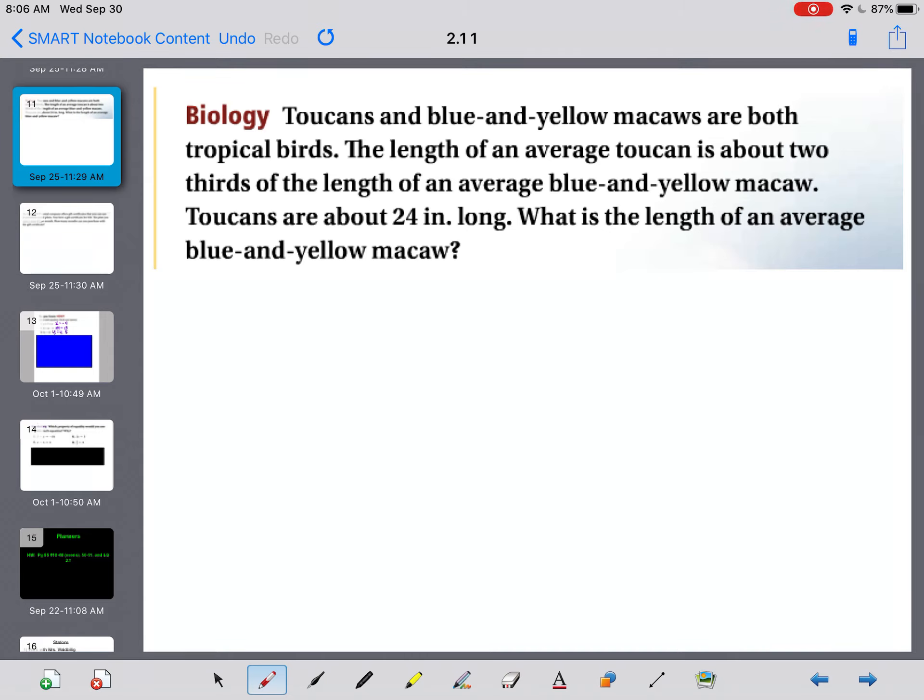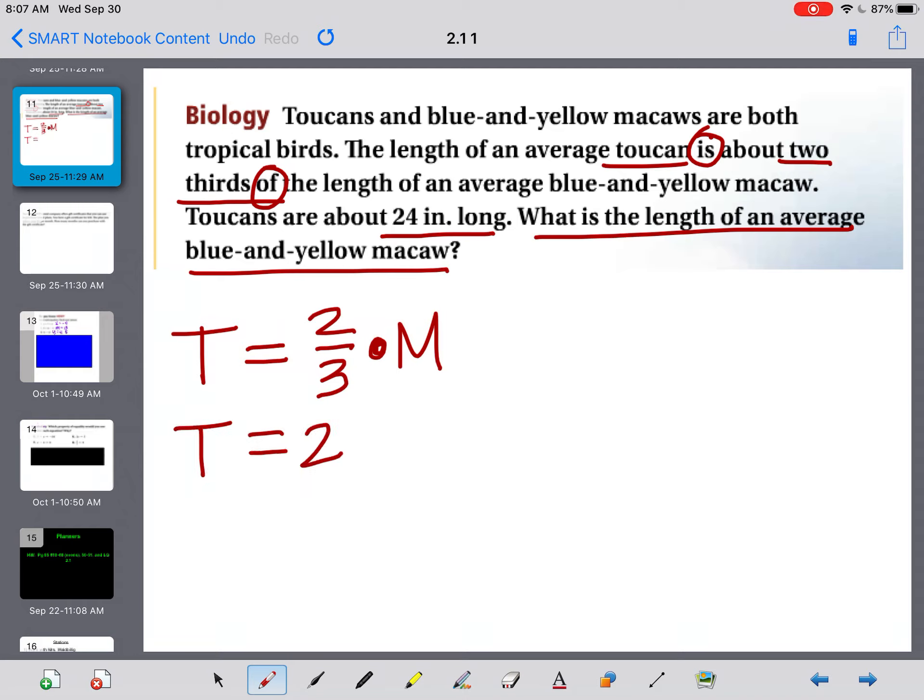Toucans and blue and yellow macaws are both tropical birds. The length of an average toucan is about 2/3 of the length of an average blue and yellow macaw. Toucans are about 24 inches long. What is the length of an average blue and yellow macaw? We're going to have to write our own equation, and then we're going to have to solve it. If I look at what they're telling me, I know the length of an average toucan is, remember is means equals, 2/3 of, tells me to multiply, the length of an average blue and yellow macaw. So a toucan is 2/3 of macaw. That's how we get this equation. Then they tell us that toucans are about 24 inches long.